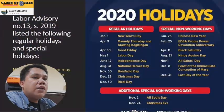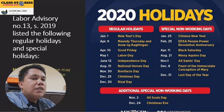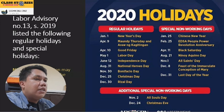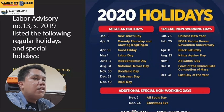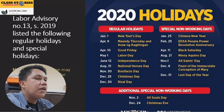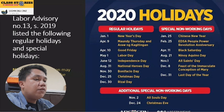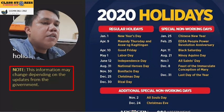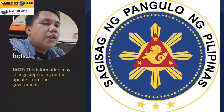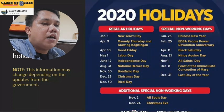This is Labor Advisory No. 13 Series of 2019, which lists the regular holidays and special holidays for 2020. Under regular holidays, we have New Year's Day, Maundy Thursday, and Araw ng Kagitingan through December 30, Rizal Day. Under special non-working holidays, we have January 25, Chinese New Year, through December 31, last day of the year. There are also additional special non-working days: November 2, All Souls Day, and December 24, Christmas Eve. Take note that this information may change depending on government updates.